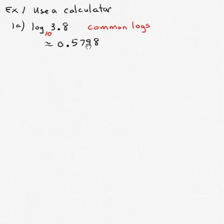Let's try to estimate in our mind if we're in the right ballpark. 10 to the 0 power is 1, and that's smaller than 3.8. 10 to the first power is 10, that's larger than 3.8. So somewhere between 0 and 1 is what my answer should be, and 0.5798 is between 0 and 1.